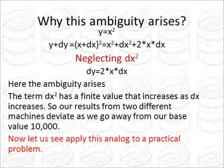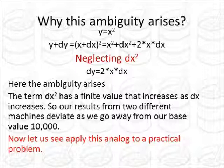Let's go back to the first principles. Y is x squared. Y plus dy equals (x plus dx) squared. Expand. Neglecting dx squared, and you get the answer. Now here is where the ambiguity arises. See, the term dx has some finite value, so does dx squared. And as dx goes on increasing, dx squared also goes on increasing. So as we get further and further away from 10,000, the deviation of our second machine actually increases from our true value.